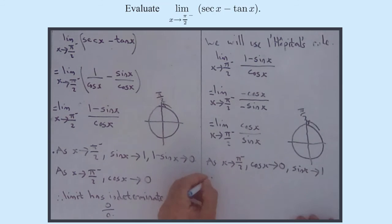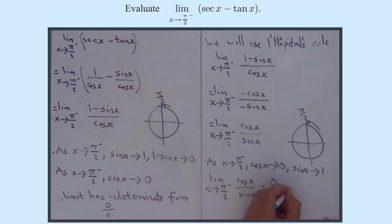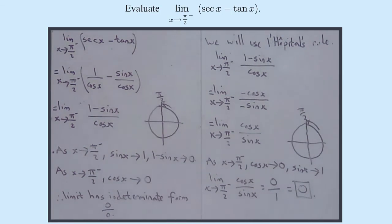So now the limit as x approaches pi by 2 from this side of cos x over sine x equals 0 over 1. And this now is not an indeterminate form. 0 over 1 is just 0. So we are finished. L'Hôpital's rule was very, very beneficial in this situation.